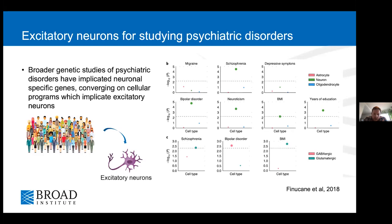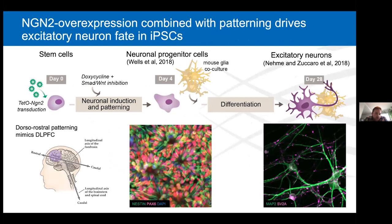Our methods for generating this cell type were published from our group a few years ago. We integrate using lentivirus a murine neurogenin into our iPSCs, which in the presence of doxycycline over-expresses neurogenin-2, and in combination with patterning molecules, pushes these towards an excitatory neuronal fate. In our particular model, we pattern these cells to take on a dorsal rostral fate that mimics the dorsal rostral prefrontal cortex, which is commonly implicated in neuropsychiatric conditions. Our model enables us to look at more mature excitatory neurons around day 28, as well as capture cells at day four in an early neural progenitor state, enabling us to look at early developmental defects and phenotypes.